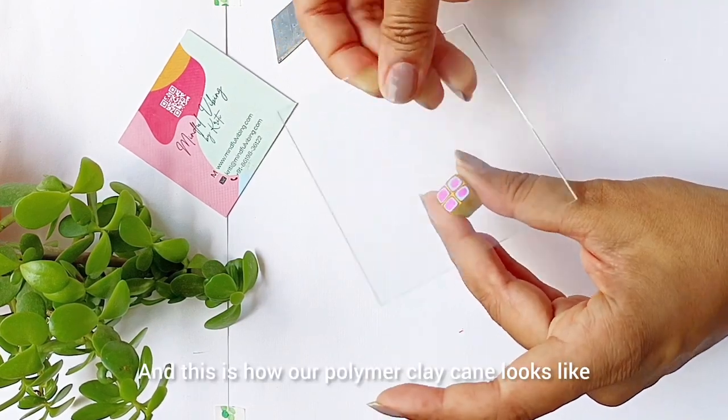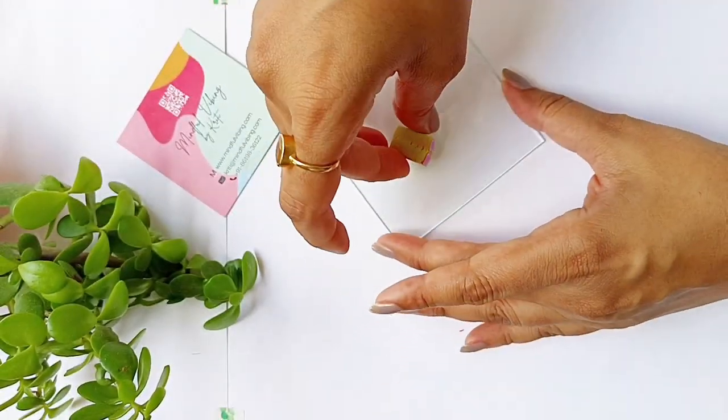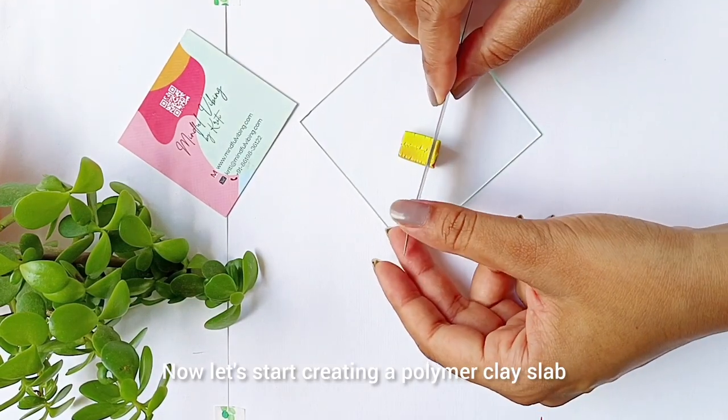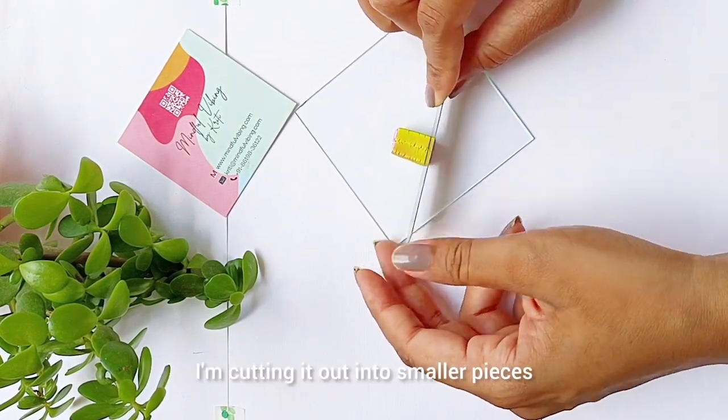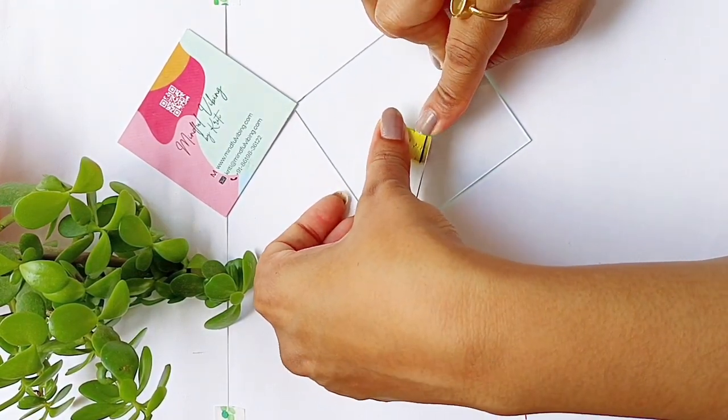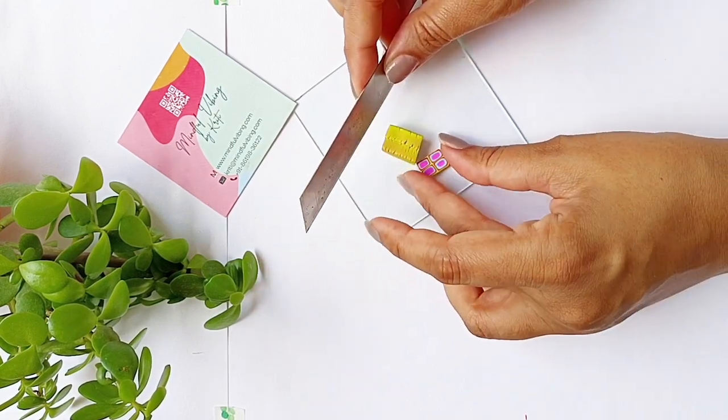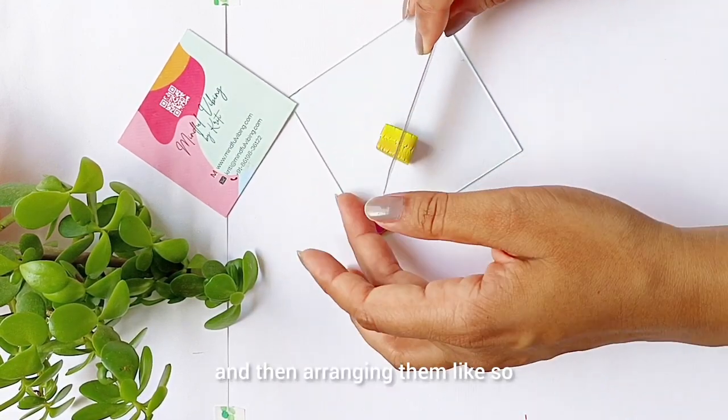And this is how our polymer clay cane looks like. Now let's start creating a polymer clay slab. I'm cutting it out into smaller pieces and then arranging them like so.